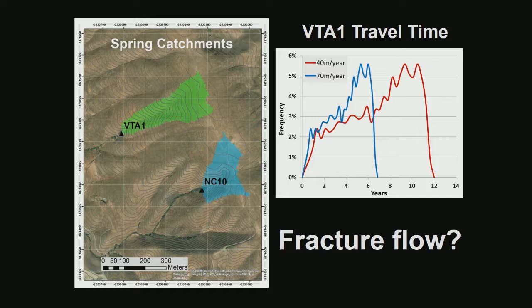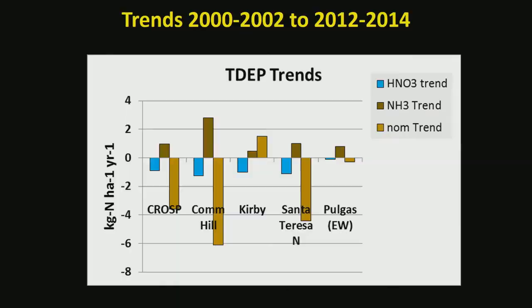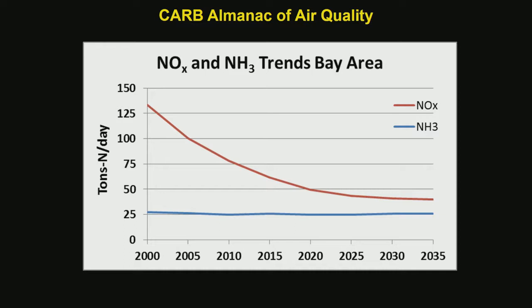We have fracture flow which will really decrease these residence times. The trends in nitrogen deposition from Tdep, from the early 2000s to 2012–2014, show a downward trend in nitric acid vapor, a downward trend in other oxidized nitrate, while ammonia is going up. The emissions inventories show we've been really good at getting NOx down — regulation works. Ammonia has been holding steady, and we're expecting another 30 percent decrease in NOx.